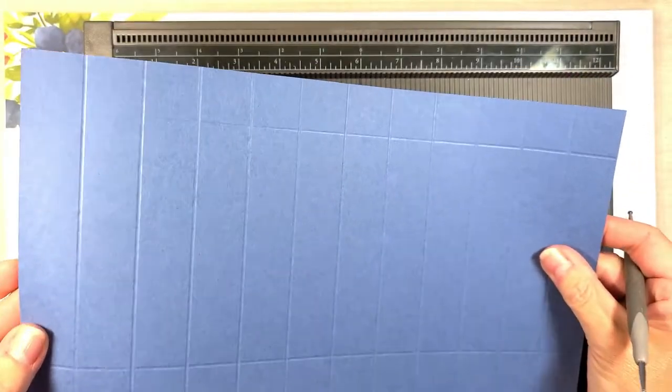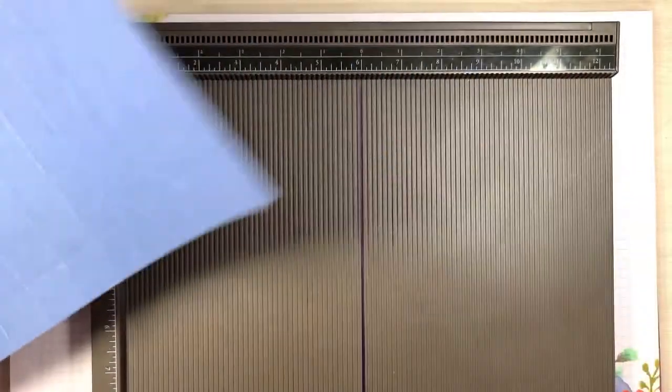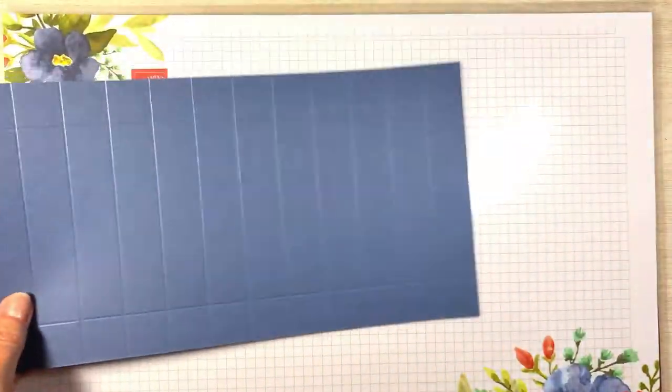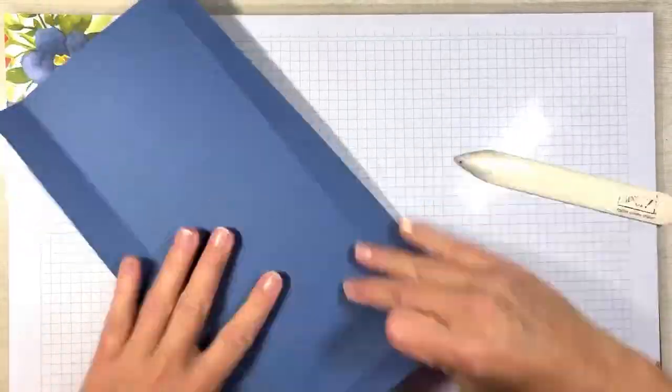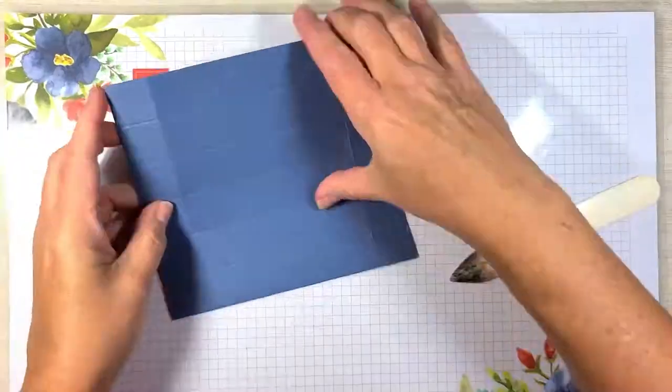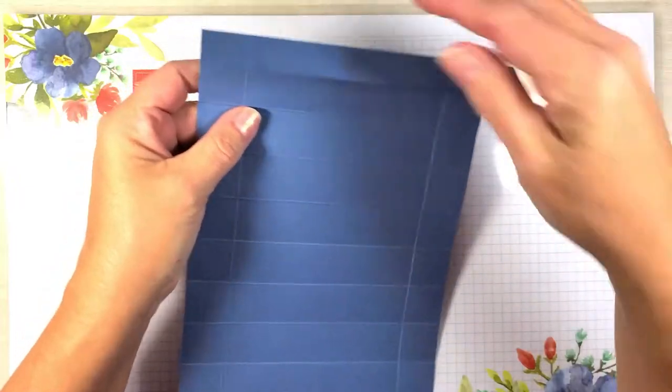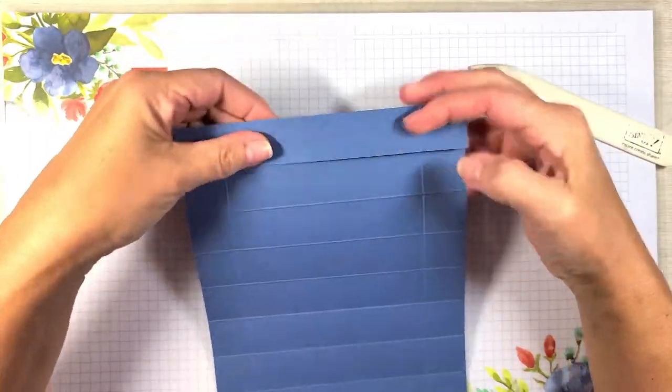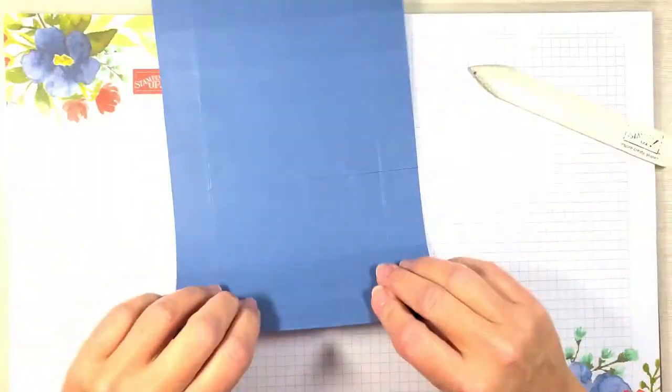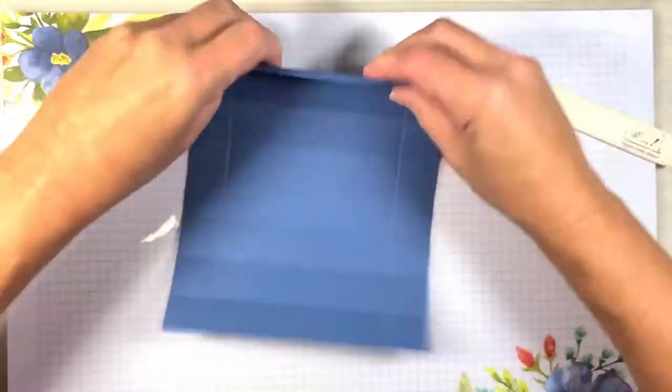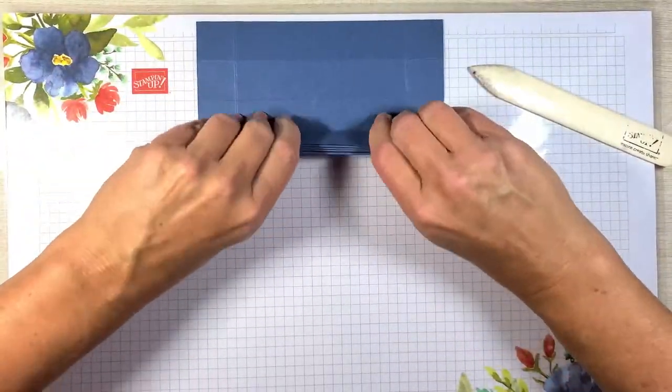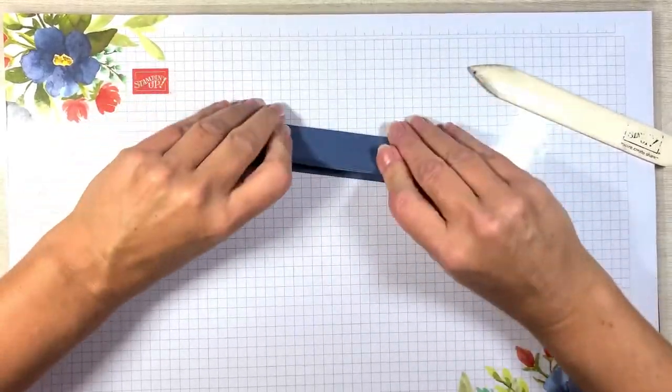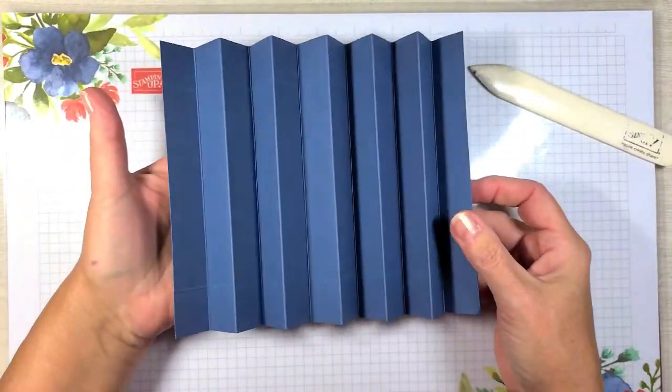Alright, so your piece should look like that. Okay, we are done with that for now. Next thing we're going to do is we're going to burnish. Now we're going to fold it like an accordion. So we're going to start with our flap, fold it down, and then turn it over. And keep on doing that until you get to the very end. And you should have something that looks like that.